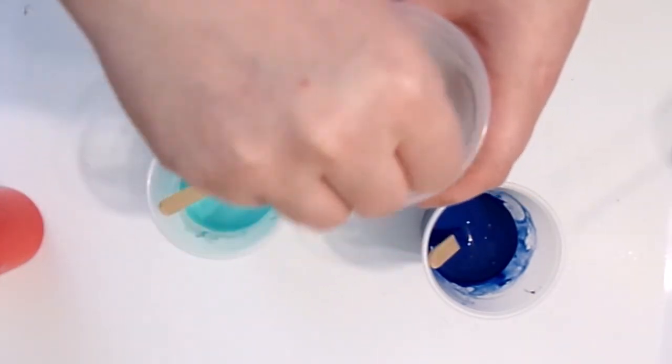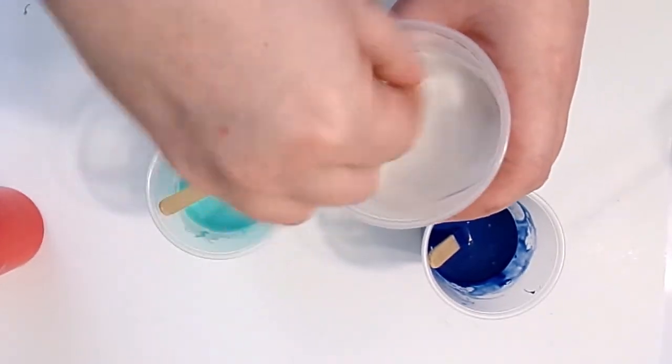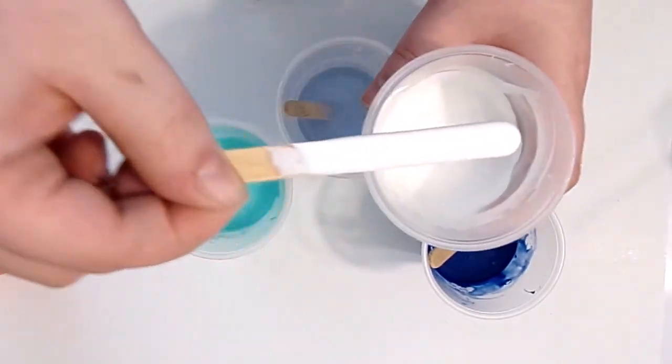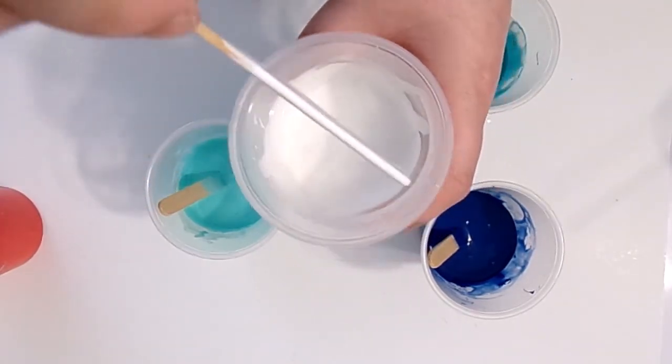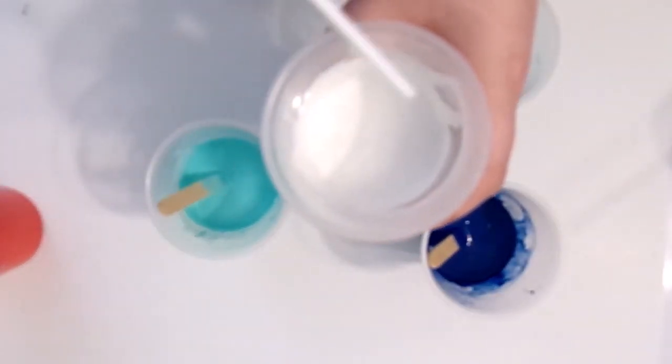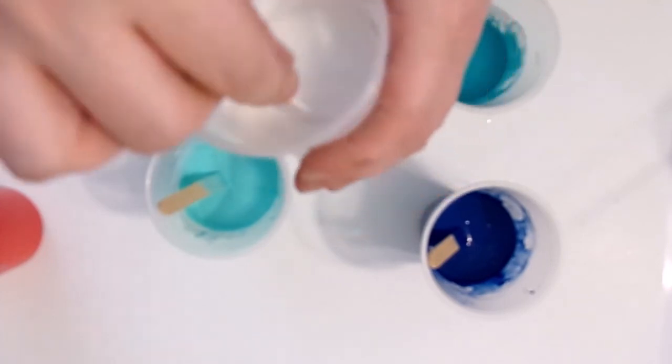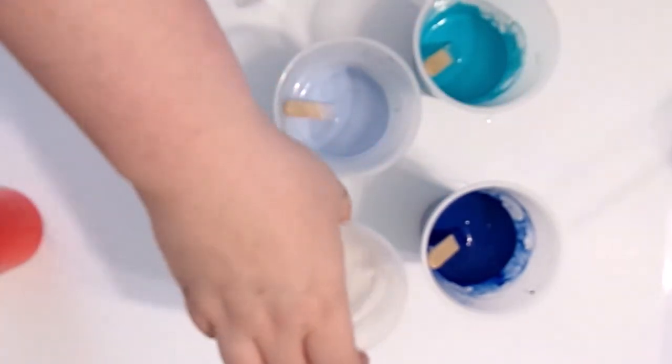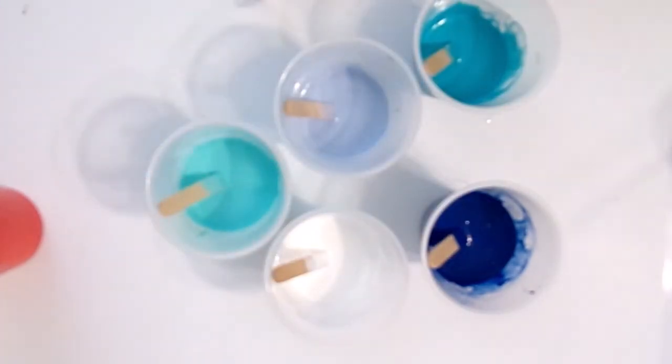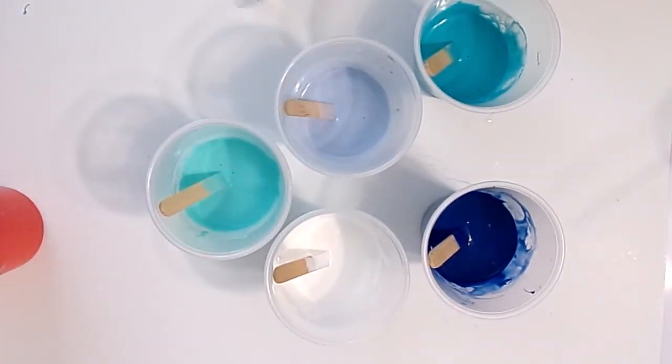So make sure you scrape the side, scrape the bottom, get that water mixed in there very well. Try it again. Okay, it streams off there, lays across the top without being too thin where it just sinks in. All right, perfect. So now we have the consistency of the paint we want.